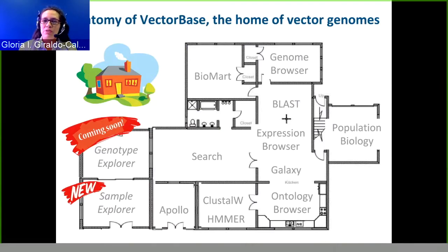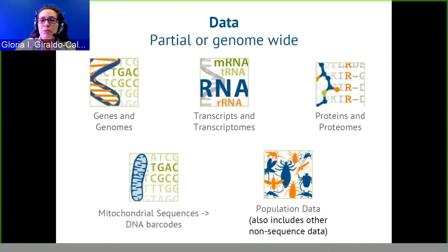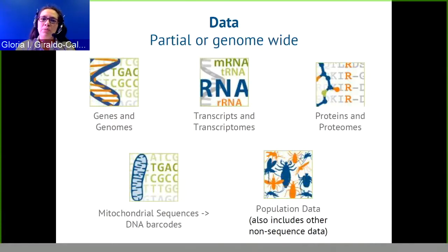Now, a little more about the data. We have complete and partial genomes in different forms: genes and genomes, transcripts and transcriptomes, proteins and proteomes, mitochondrial sequences — which will soon be replaced by DNA barcodes — and also population data. The population data we are migrating to includes, for example, insecticide resistance data — both genotypes and phenotypes — or any other biology, ecology, or behavior trait that you can measure from an individual or pool of individuals from the lab or the field.